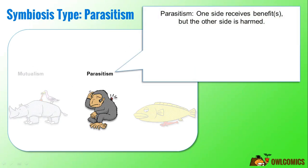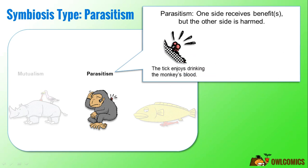Another type of symbiosis is parasitism. In parasitism, the story gets a little disturbing, because while one side receives benefits, the other side is being harmed at the same time. In our example, the tick enjoys drinking the monkey's blood, but the monkey is being harmed because it is losing blood.